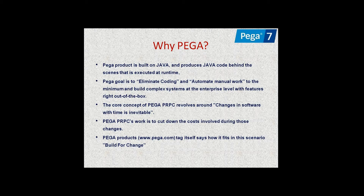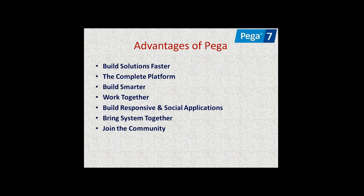We cannot compare Pega with other BPM tools in the market. Other BPM tools only perform simple functions — we cannot develop full web applications with them. The main concept of Pega is to develop applications without writing any coding and to cut down the cost. Whatever you can do in Java, you can also do in Pega — it is one powerful tool.